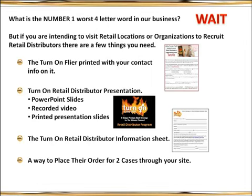You're going to need a way to place their order for two cases through your site — whether via laptop with Wi-Fi, a wireless card, a connection inside their facility, or their own computer. They'll be placing their first two cases through your site, so you're going to get the 23% on those two cases. Then you set up their site, and after that everything they place will be on their site so they get the 23%. Remember: if someone wants to order more than two cases, don't do that through your site — you'd be taking away their 23%.